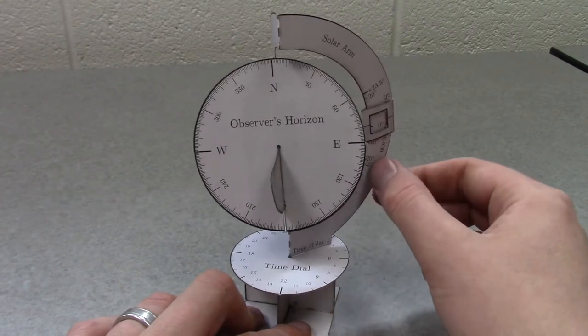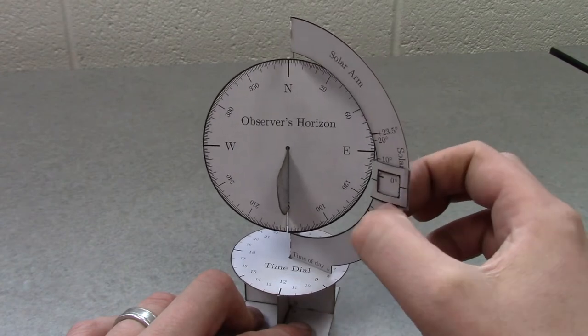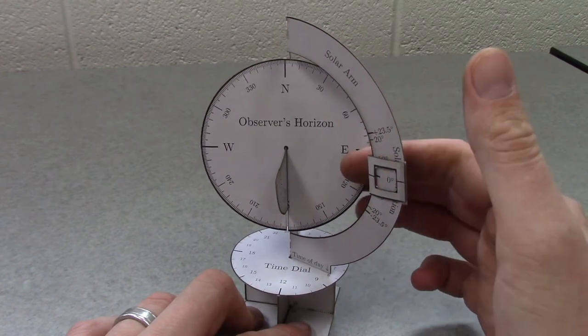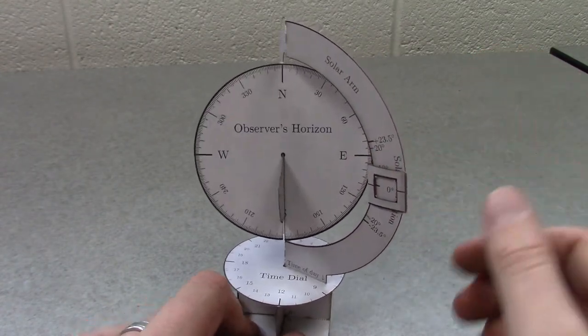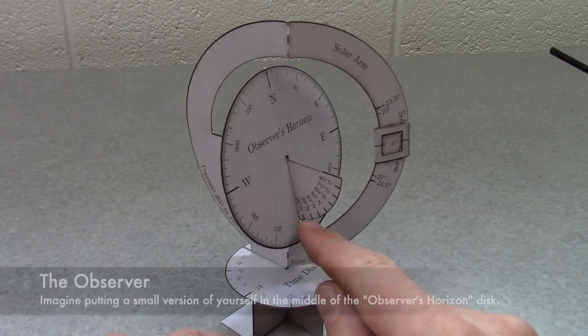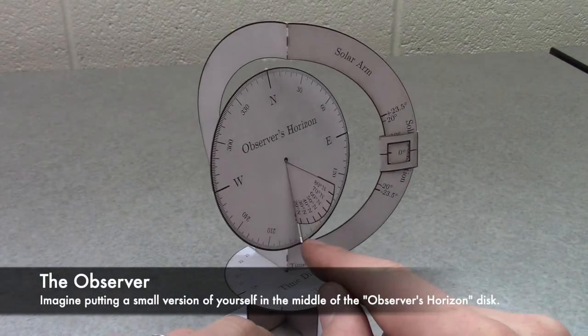We can simulate the sun's motion through the sky on a daily basis by changing the time of day after setting the solar declination as appropriate and the observer's latitude as appropriate. So for this example, I'm going to let it be about 15 degrees north latitude. That's where the observer is.